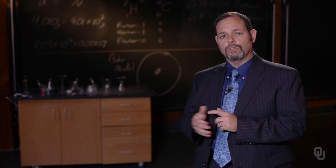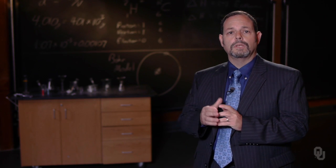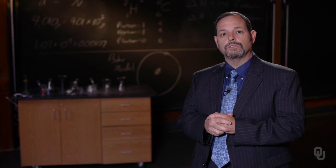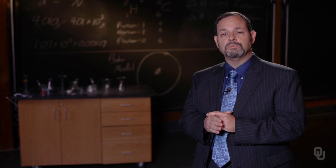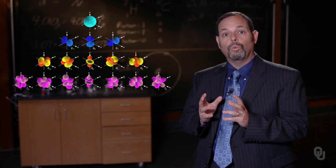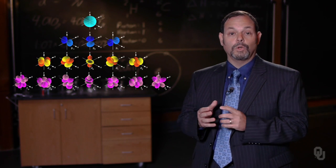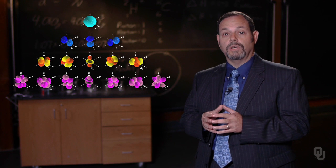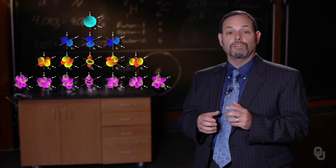One more piece of information: when we look at our L values — zero, one, two, and three — they have specific shapes. The shape for L equals zero is S. The zero actually gives us important information about the shape: there are no nodes in this three-dimensional shape. For L equals one, that's referred to as P, and since L equals one, it has one node, so all shapes in P will have one node. When we look at L equals two, we refer to that as D, and it's going to have two nodes. When we look at L equals three, that is F, and it'll have three nodes. All of the quantum numbers give us probable electron densities and locations for our electrons. We're going to be able to use these along with electron configurations and the periodic table to help us predict the reactivity and the physical properties of the elements.